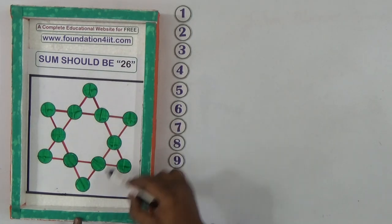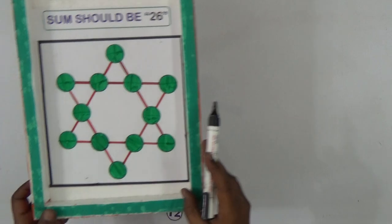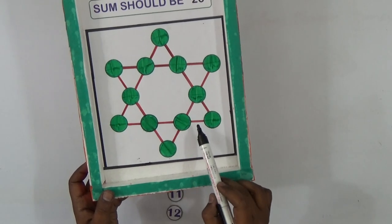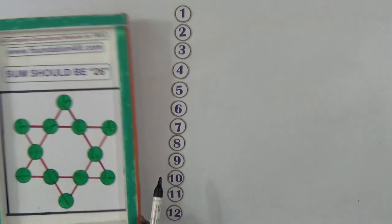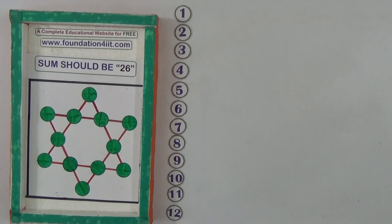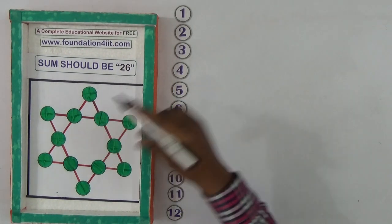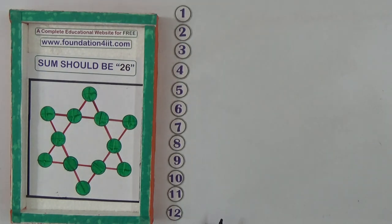Now when you observe these four, total we have one, two, three, four, five, six - there are six straight lines. Total circles are 12, so we need to keep these 12 numbers in this.